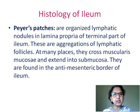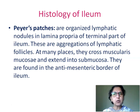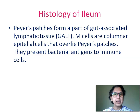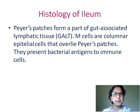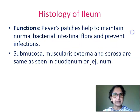Now let us see what Peyer's patches are. These are organized lymphatic nodules seen in the lamina propria of the terminal part of ileum — aggregations of lymphatic follicles. At many places these cross the muscularis mucosae and extend into the submucosa. They are found along the antimesenteric border of the ileum. Peyer's patches form a part of the gut-associated lymphatic tissue (GALT). M-cells are columnar epithelial cells that overlie the Peyer's patches and present bacterial antigens to immune cells. Peyer's patches help to maintain normal bacterial intestinal flora and prevent infections.